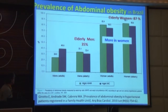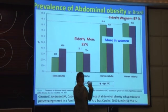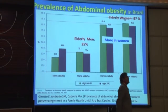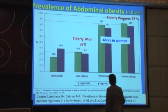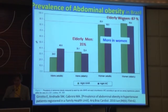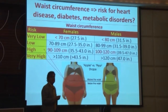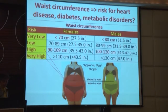It is commonly said that abdominal obesity is a men's problem, but actually the highest incidence is in elderly women, not elderly men. This is because women are even more deficient in testosterone than men, and testosterone is one of the key hormones that reduces abdominal obesity in both men and women.